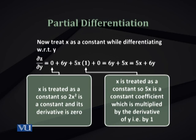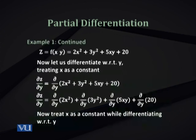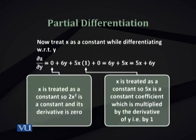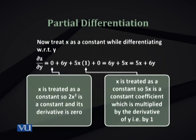Remember that in this result, x is treated as a constant — we held the variable x and differentiated with respect to y, assuming y is the only variable. In the mixed term, 5x is a constant coefficient, just as in simple derivatives where we retain the constant and differentiate the variable part. This is the philosophy of partial differentiation.